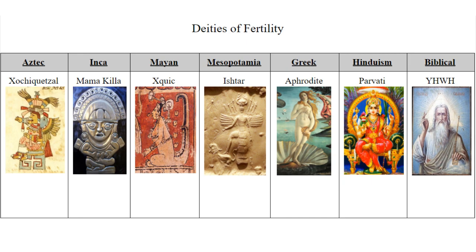Finally, we turn to the gods or goddesses of love and fertility. Most of these deities — with the exception of Yahweh, which should be expected at this point — all represent fertility or love in some fashion. Yahweh is only on here because he is the only deity in the Bible, and thus this is something attributed to him as well.